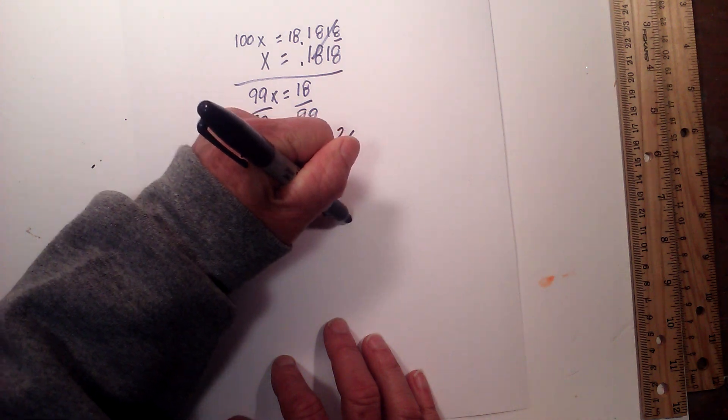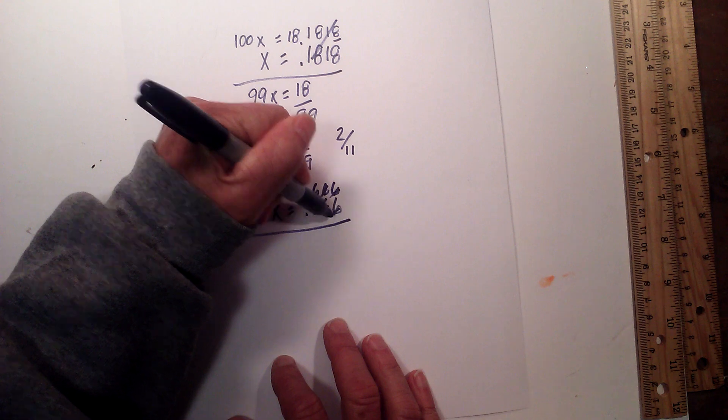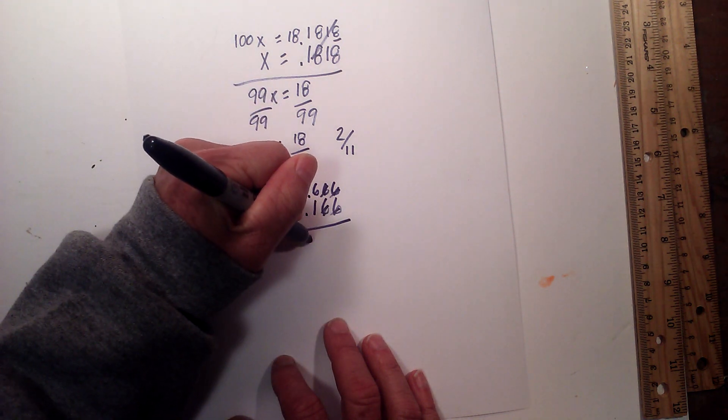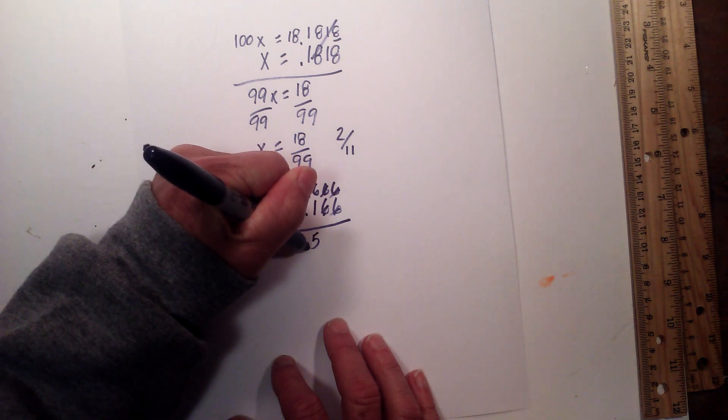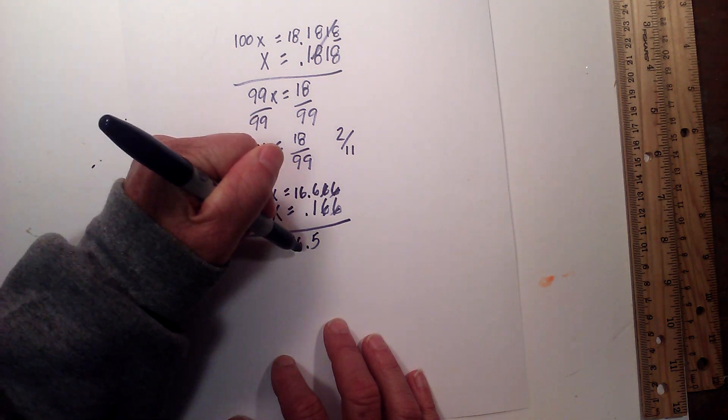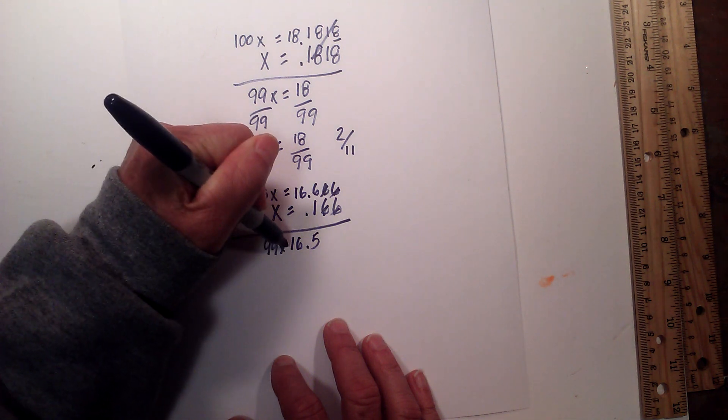Okay, so now it doesn't cancel out exactly like before. These cancel, but now we have 16.666 minus 0.166, which equals 16.5. Bring down the decimal when you subtract. So you'll have 99x equals 16.5. It's kind of messy.